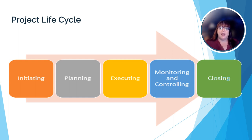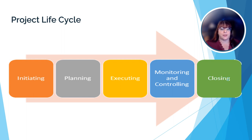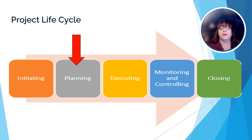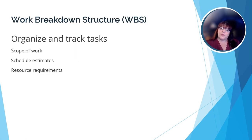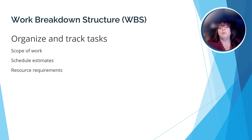The five processes are: Initiating, Planning, Executing, Monitoring, Controlling, and Closing. In this particular unit, we're looking at Planning. The most important part of the planning phase of project management is to come up with plans for completing the project.